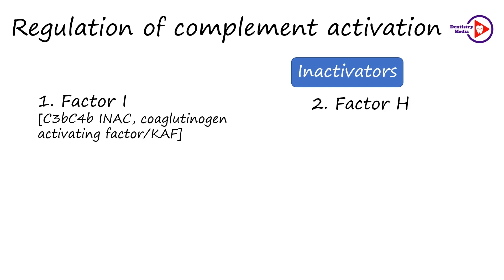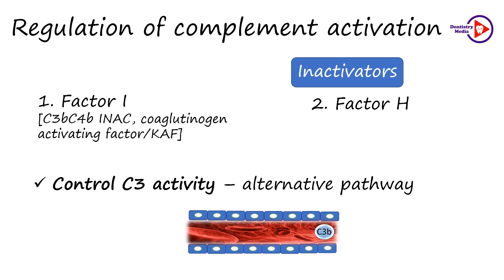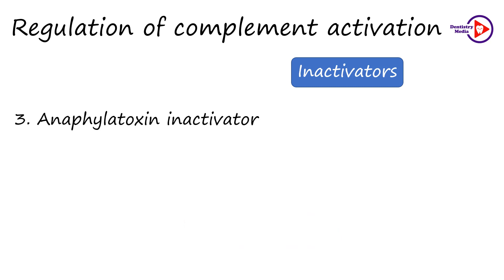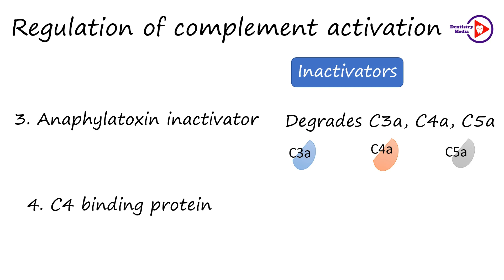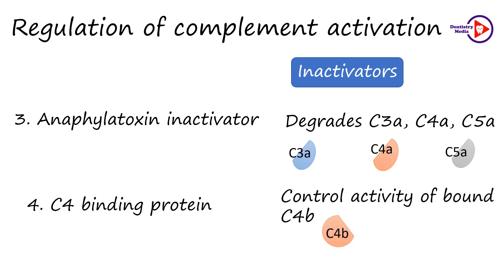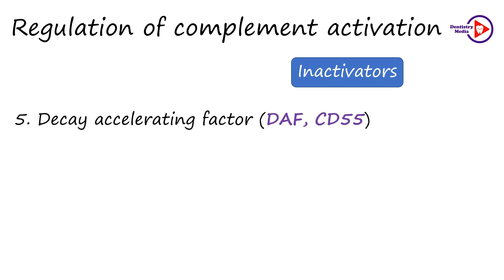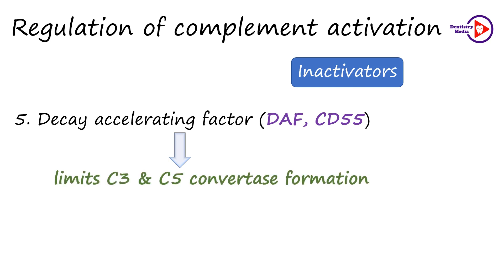The second inactivator is Factor H. Both inactivators are beta globulins present in the serum and they majorly control the C3 activity of the alternative pathway. The next is the anaphylatoxin inactivator, an alpha globulin which enzymatically degrades the anaphylatoxins released during the cascade, those being C3A, C4A and C5A. The C4 binding protein also controls the activity of cell-bound C4B. The protection of human cells from lysis by the MAC complex is mediated by the decay-accelerating factor, also represented as DAF or CD55. It is a glycoprotein located on the surface of human cells and limits the formation of C3 convertase and C5 convertase by binding to C3B and C4B, thereby preventing formation of the MAC complex.